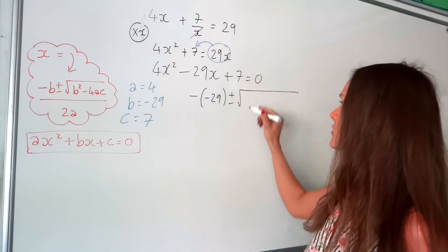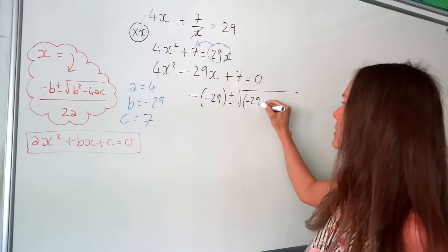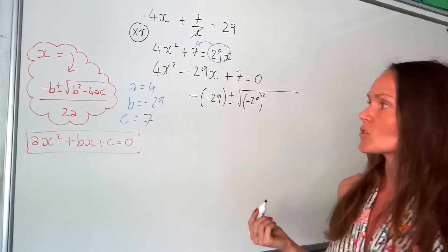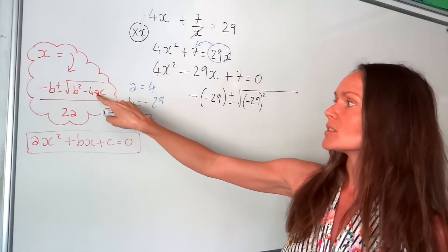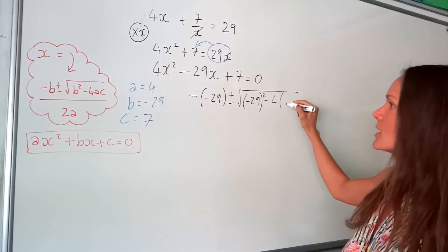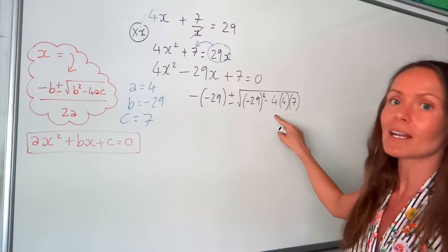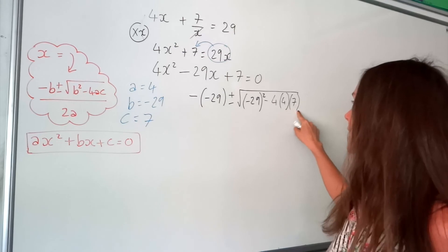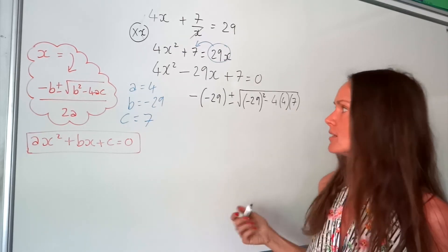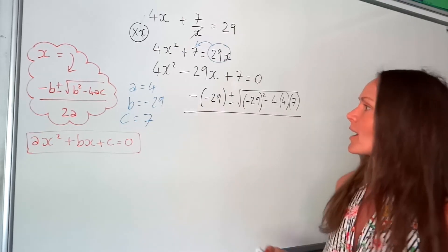remember to put b in brackets, just like I explained earlier. So, negative 29 squared, minus 4 times a times c. So, minus 4 times a times c. So, you can write times if you prefer, but brackets, remember brackets mean multiply. So you can just stick with brackets if you like that. And then underneath, 2 times a, so that's 2 times 4, because a is 4.